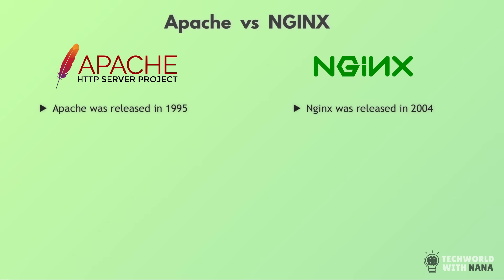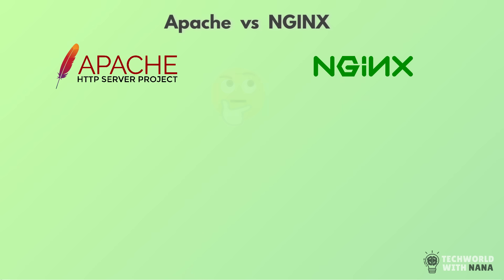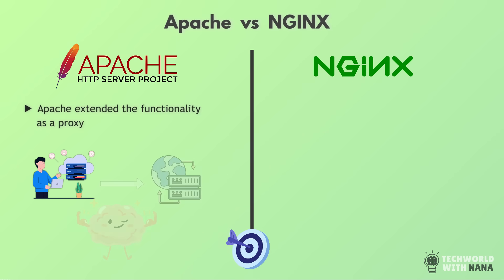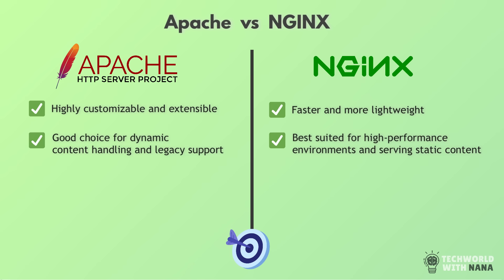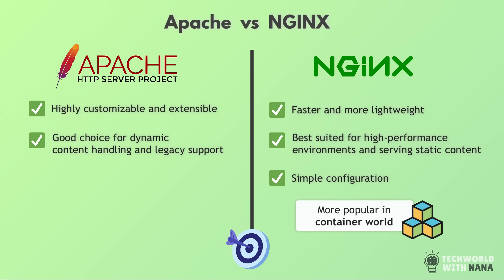Some of you who've been in IT longer may have worked with Apache web server — so what's the difference between Apache and Nginx? Not much, actually. Nginx and Apache web servers do pretty much the same thing. Just like Nginx, Apache used to be a basic web server and then extended its functionality as a proxy with all the benefits and functionalities discussed. Apache was already widely used when Nginx was created. The major benefit of Nginx was that it was faster, more lightweight, and had a definite advantage when it came to serving huge amounts of static files, plus a pretty easy configuration. And Nginx became more popular in the container world.